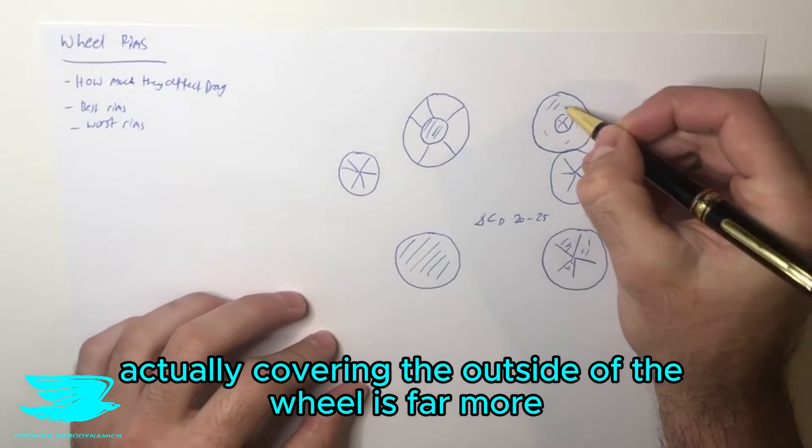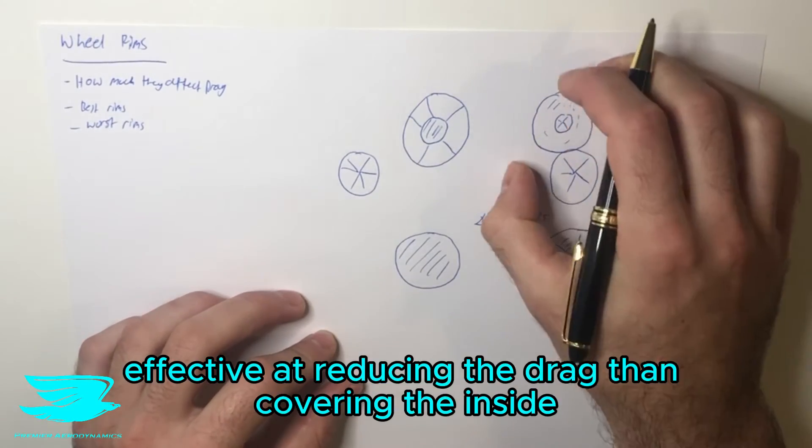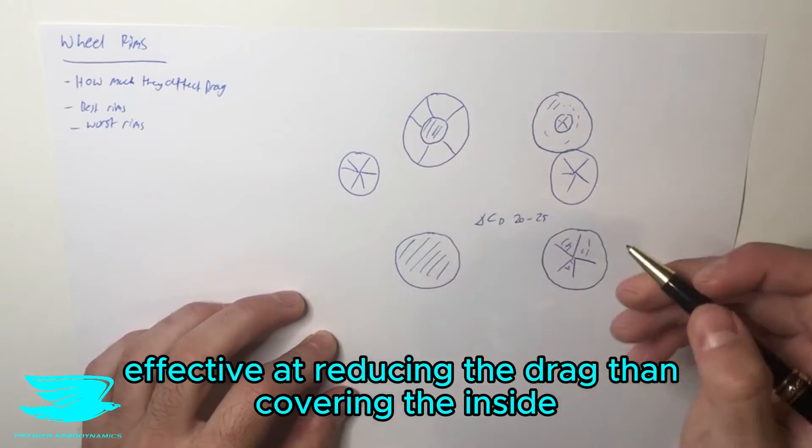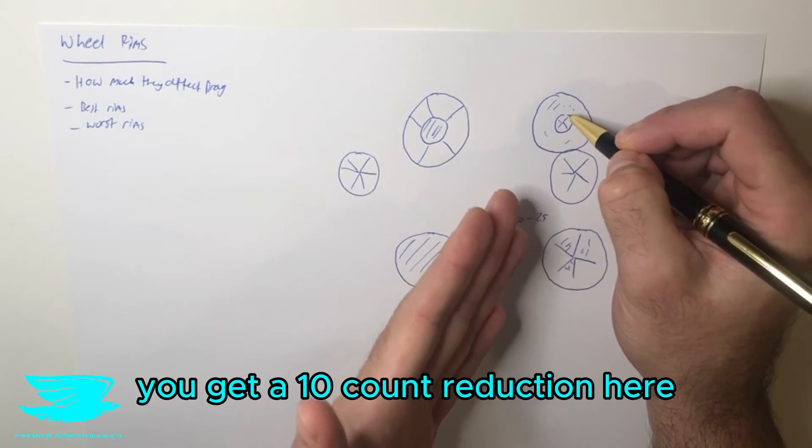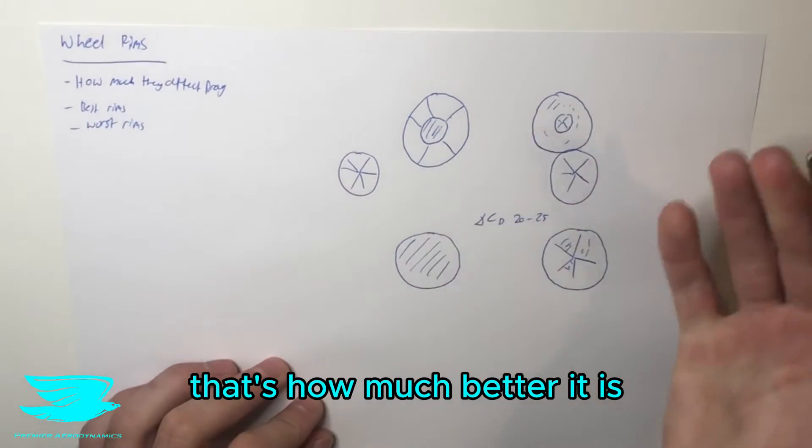Will this give the same drag changes? The answer is no, actually. Covering the outside of the wheel is far more effective at reducing the drag than covering the inside. In fact, generally speaking, let's say you get a 5 count reduction here, you get a 10 count reduction here, or 15 count reduction here. That's how much better it is.